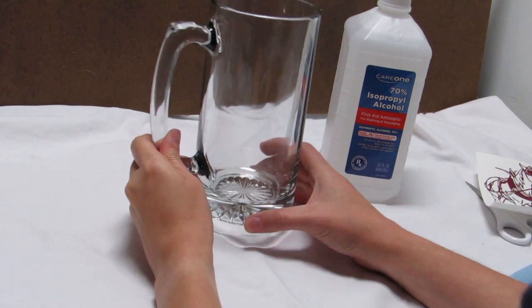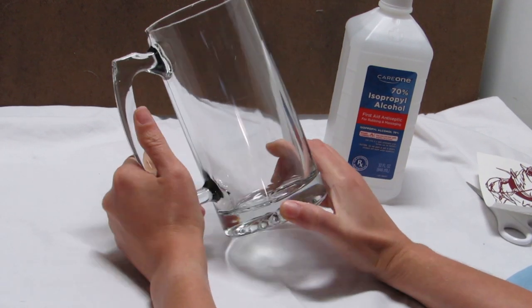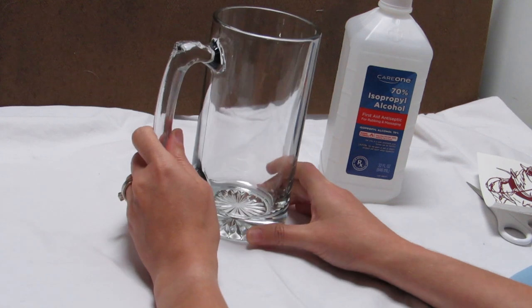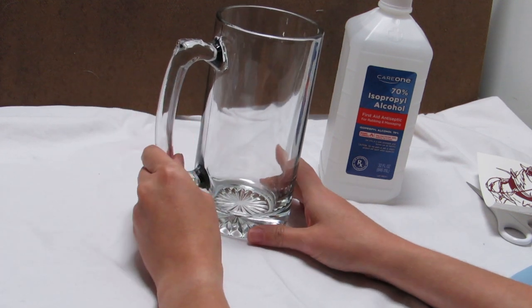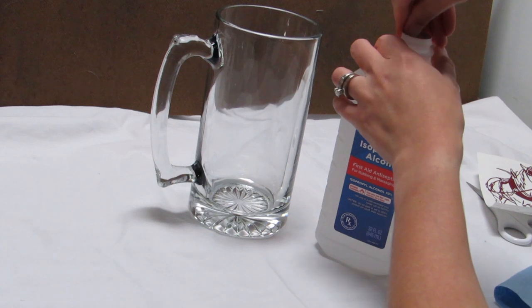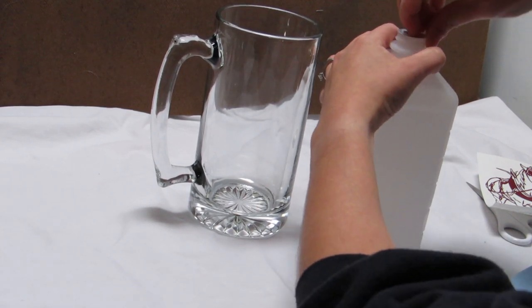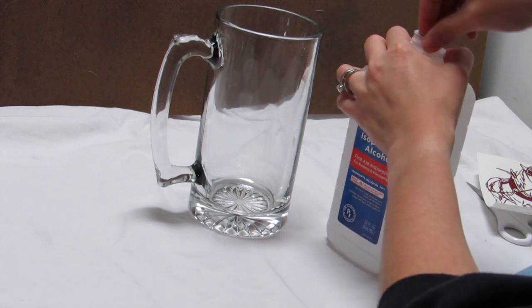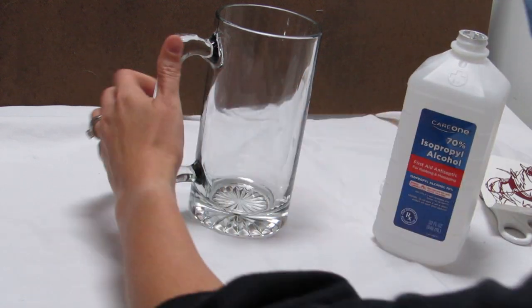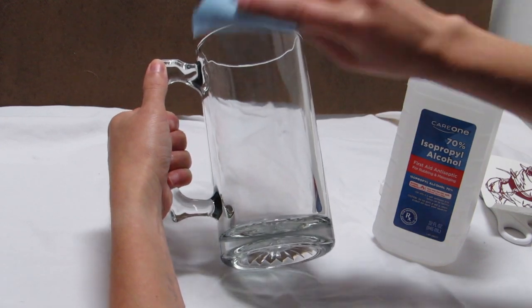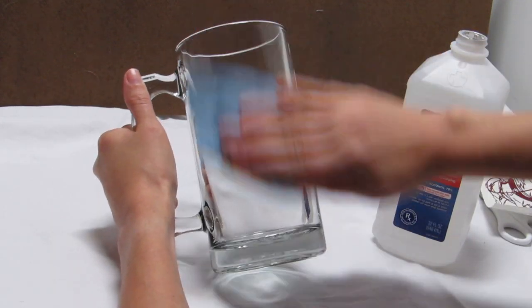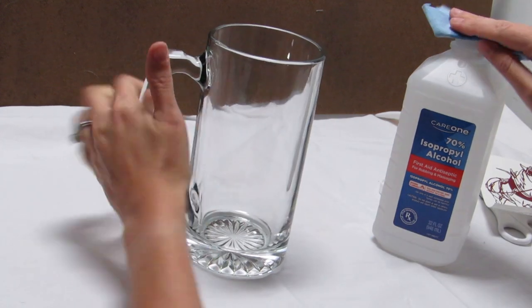The first thing you want to do is start off with a clean and dry mug. Make sure you wash this with soap and water and make sure it is completely dry before you start. It's very important that it's dry and does not have any residue on it. Which brings me to the next step, the rubbing alcohol.